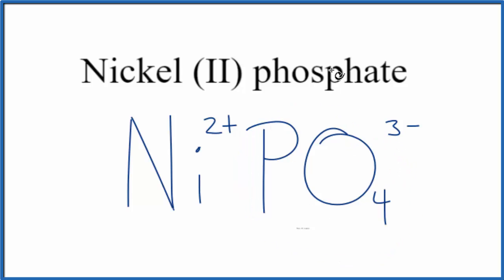Because we have a neutral compound—it doesn't say ion after the name—these charges need to add up to zero. We need a net charge of zero. That's a little bit difficult; we have a 2+ and a 3-.